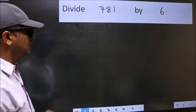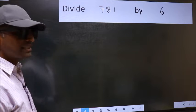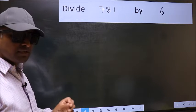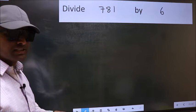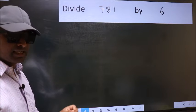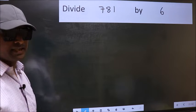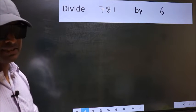Divide 781 by 6. While doing this division, many make this mistake. What is the mistake that they do? I will let you know, but before that, we should frame it in this way.